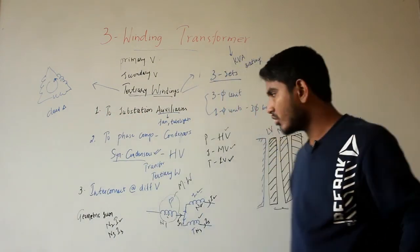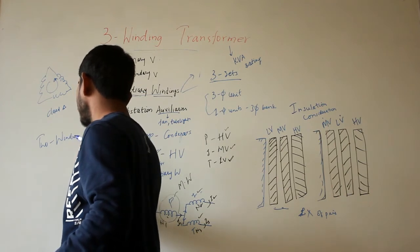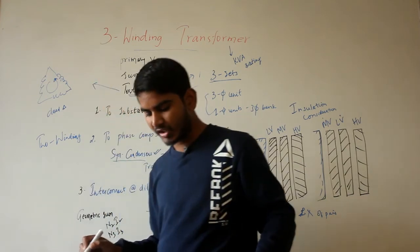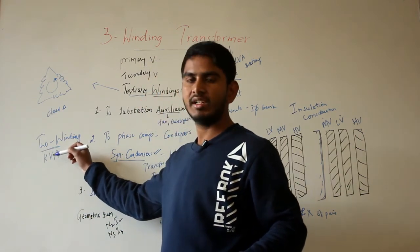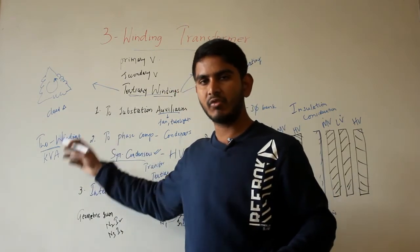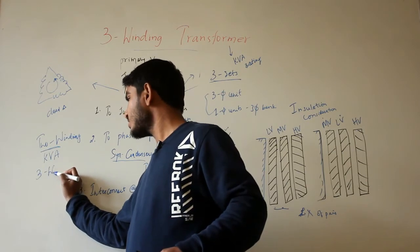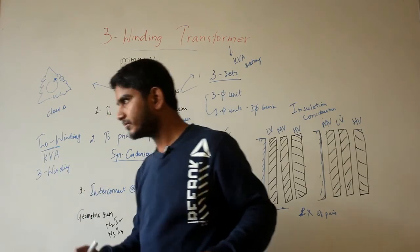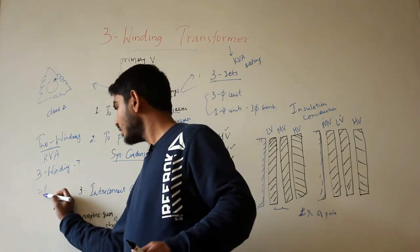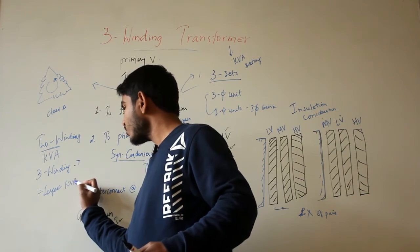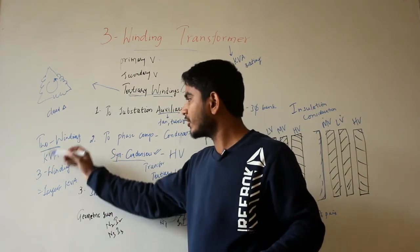Regarding ratings: in a two-winding transformer, the KVA ratings of the primary and secondary windings are the same, and that KVA rating is the rating of the transformer. But in a three-winding transformer, the three windings may have different KVA ratings, and the rating of the three-winding transformer will be equal to the largest KVA rating of any of the three windings. This is the most important difference compared to the two-winding transformer.